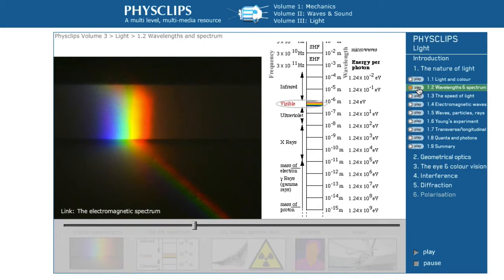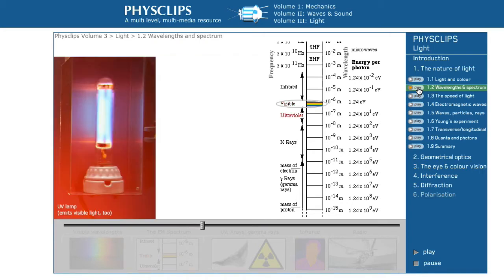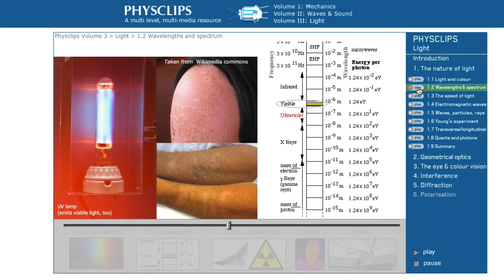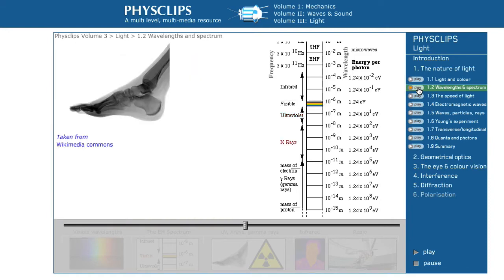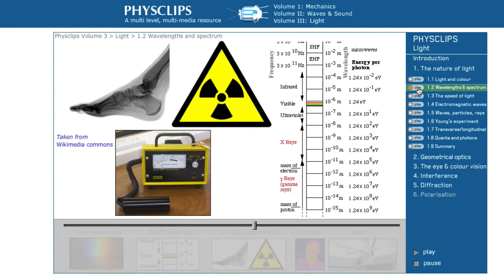Beyond violet, waves with shorter wavelengths are called ultraviolet. We can't see ultraviolet, but it can cause our skin to tan or to burn. Beyond ultraviolet lie x-rays and gamma rays, which are increasingly more dangerous than ultraviolet.